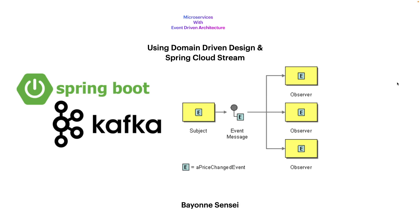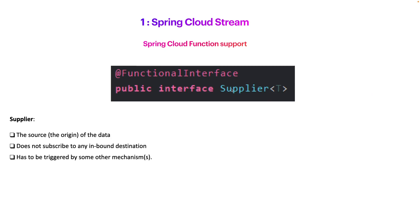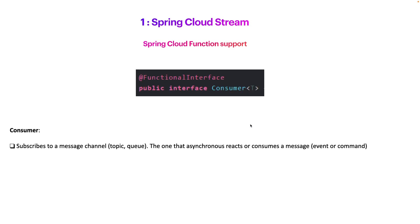Hey guys, welcome back to our series on microservices with event-driven architecture. We are using domain-driven design with Spring Cloud Stream. In the previous videos we already covered the supplier — used to send data into Kafka — and the consumer — used to consume a message from a topic or queue, whether using Kafka or another messaging system like RabbitMQ.